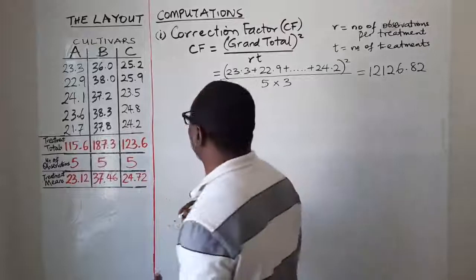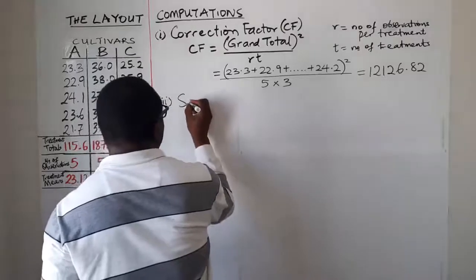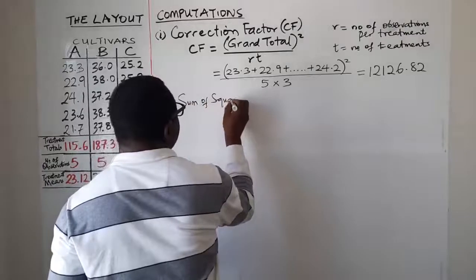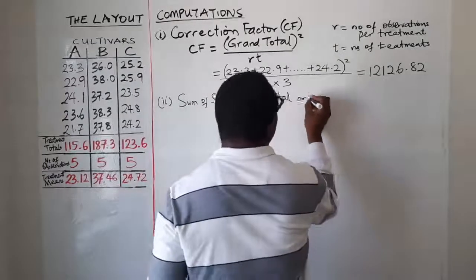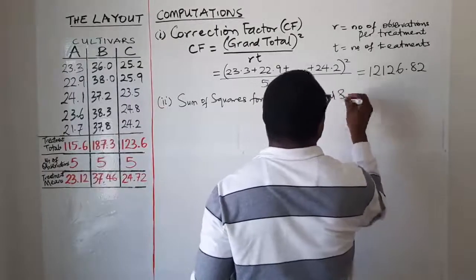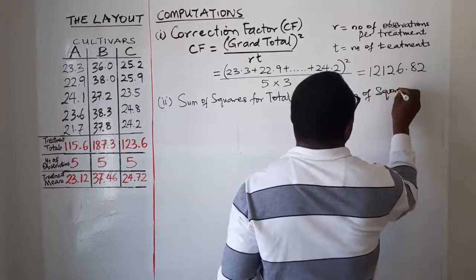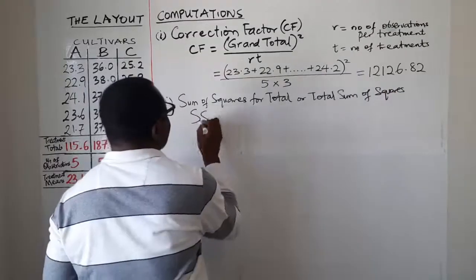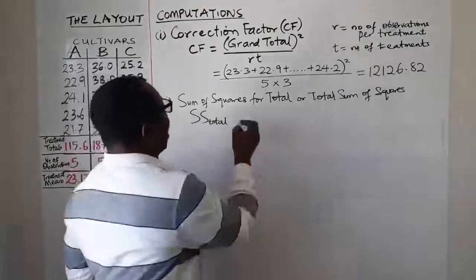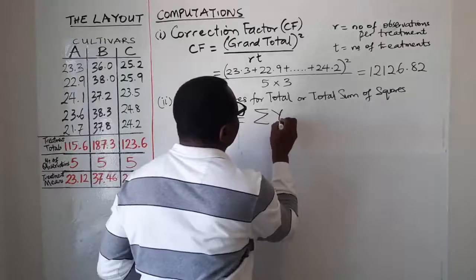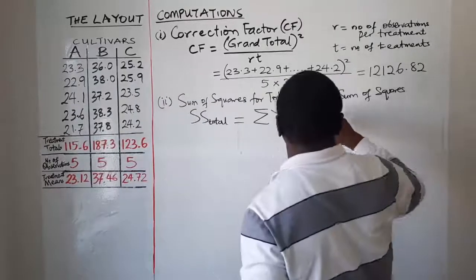After the correction factor, the next item to be computed — item 2 — is what we know as the total sum of squares, abbreviated as SS subscript total. It is computed with the formula: the summation of all squared individual observations (y_ij squared) minus CF.